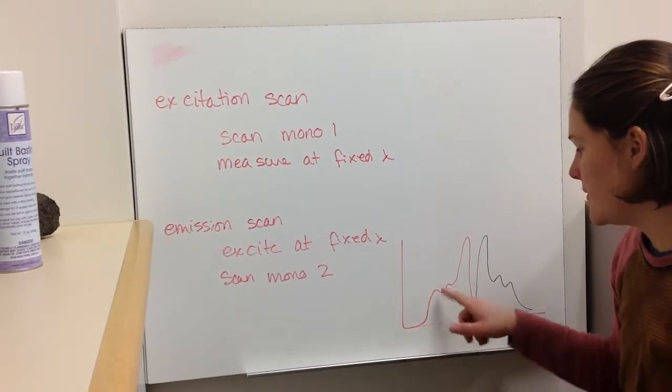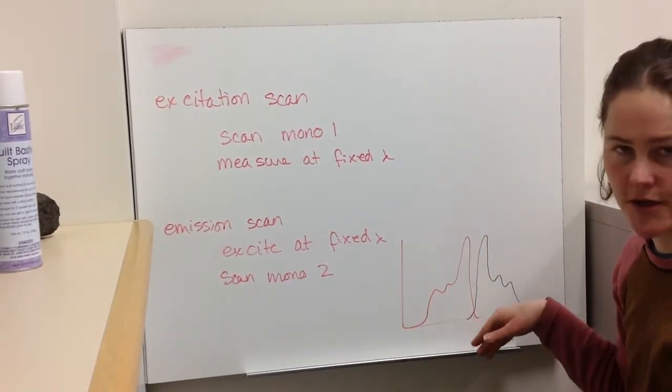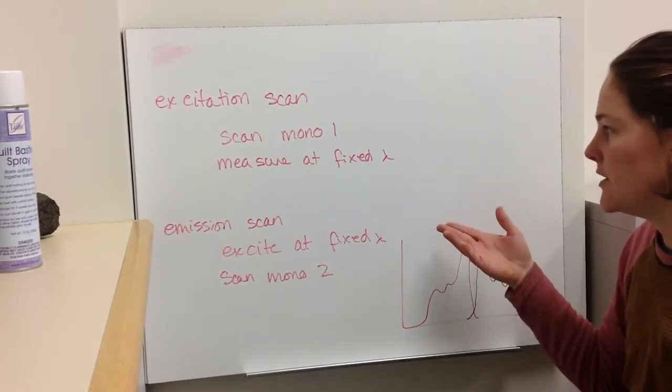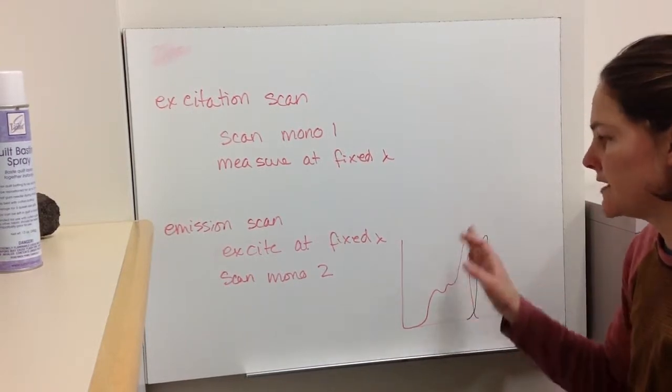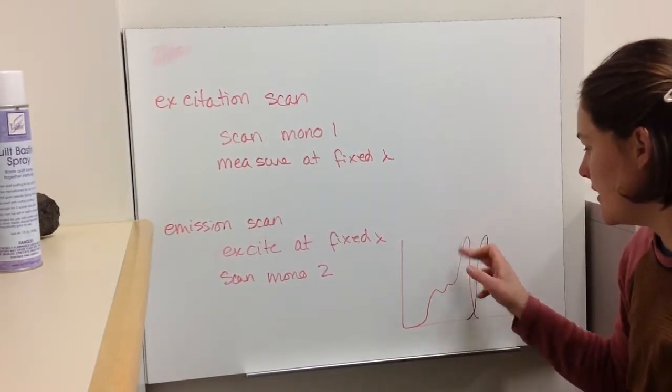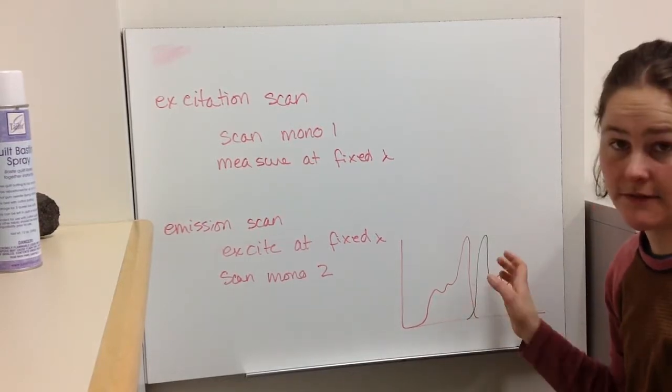But basically, if you scan excitation, you're going to look at what the excitation is measuring at a single emission wavelength for mono two. Or you can fix mono one here, and then look at the emission lines from mono two.